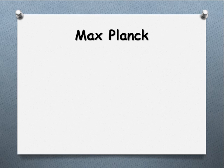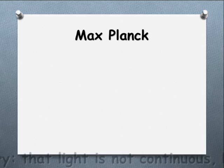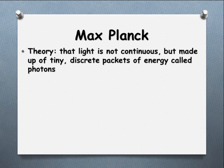Now enter Max Planck. In about 1900, he was attempting to explain the spectrum for light emitted from a hot object, what we'd call a black-body radiator. He developed a theory that light's not actually continuous, like the continuous wave model that we've been looking at, but rather discrete packets of energy which he called photons.